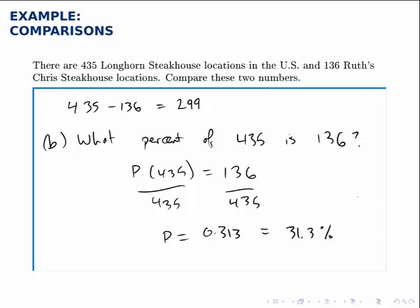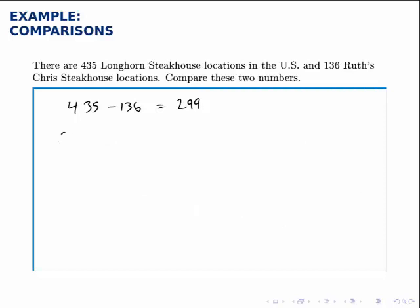Now for the second two, we'll ask what percent larger is Longhorn Steakhouse, and what percent smaller is Ruth's Chris. So the third question we'll ask is what percent larger is Longhorn? When we're talking about a percentage difference, again, we find the total difference, which is the 299, and divide that by the one that we're comparing to.